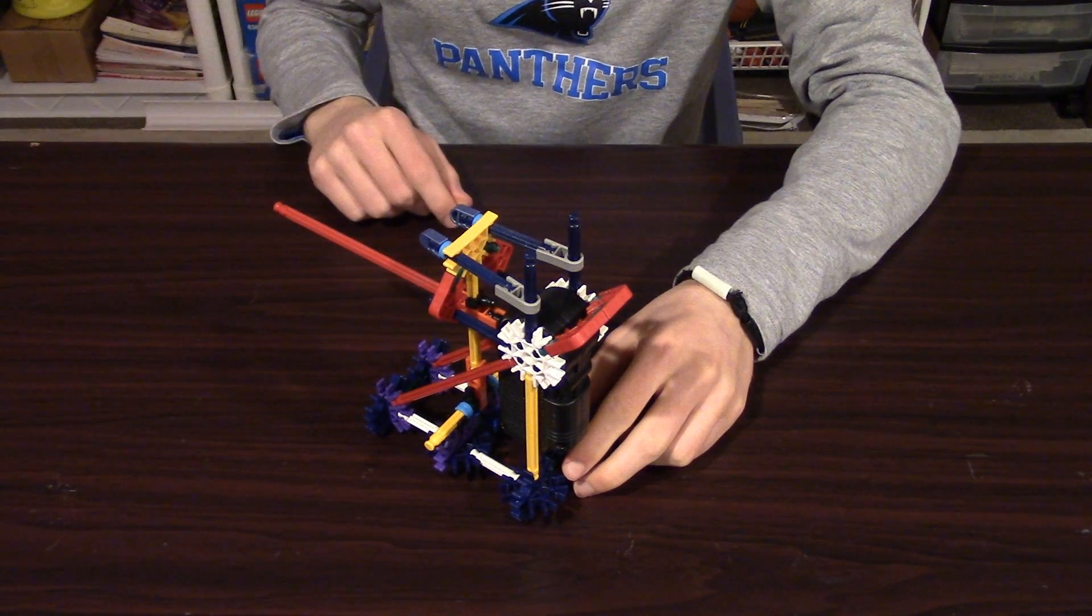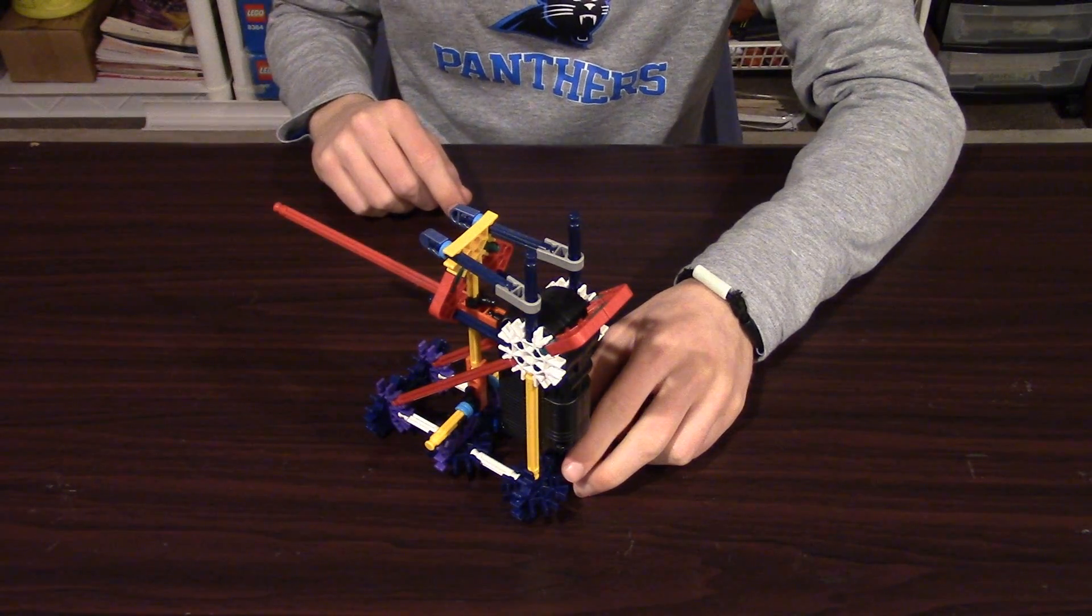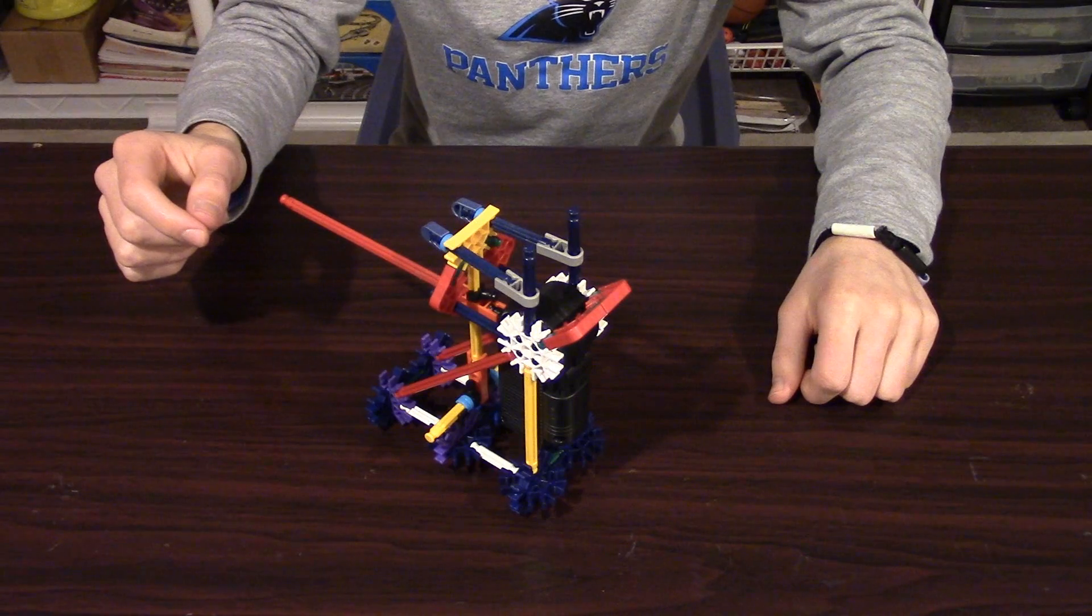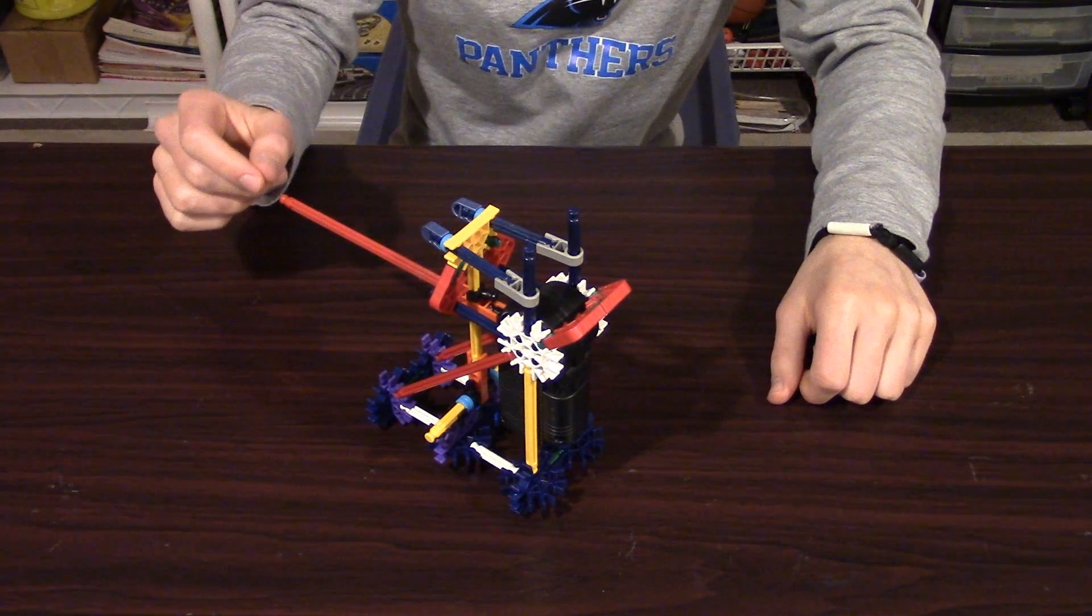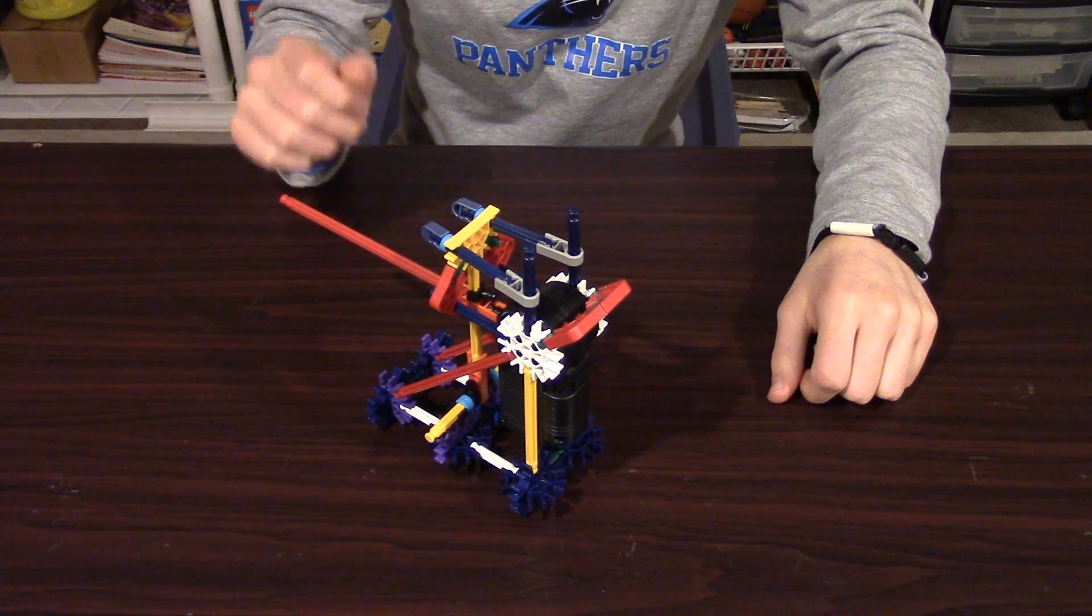But it also has two other functions, turning the motor off and making it rotate the other way. To turn on the K'nex motor, push the rod to one side. To turn it back off, push the rod back to the middle. And to make the K'nex motor rotate in the other direction, push the rod to the other side.